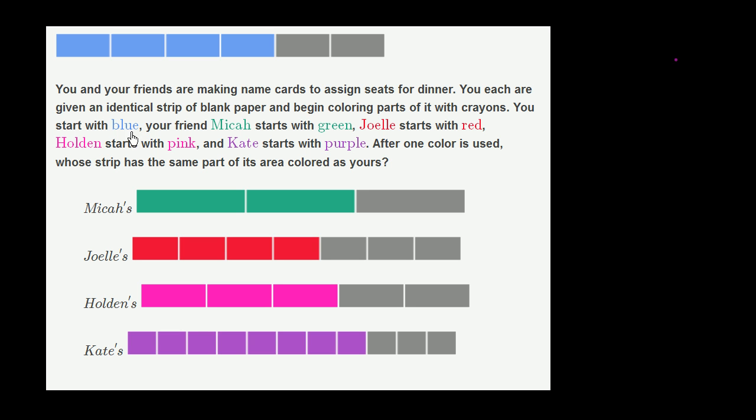You start with blue, your friend Mika starts off with green, Joelle starts with red, Holden starts with pink, and Kate starts with purple. After one color is used,